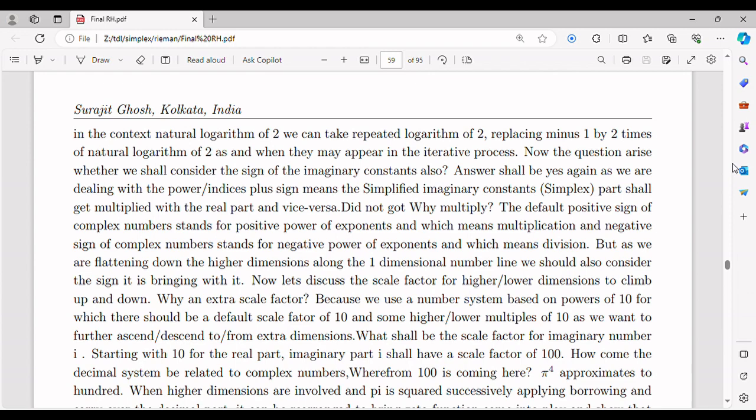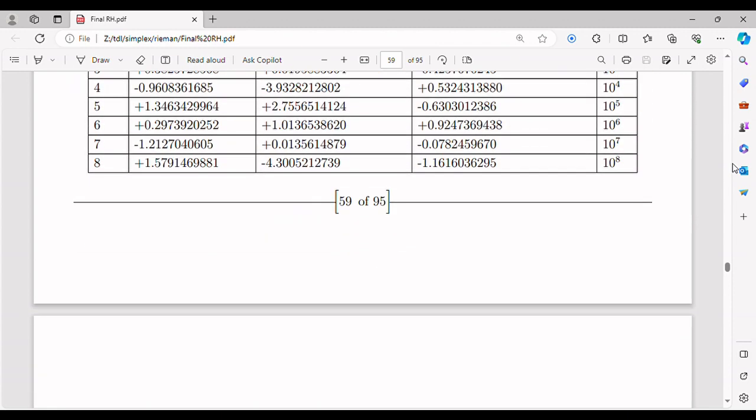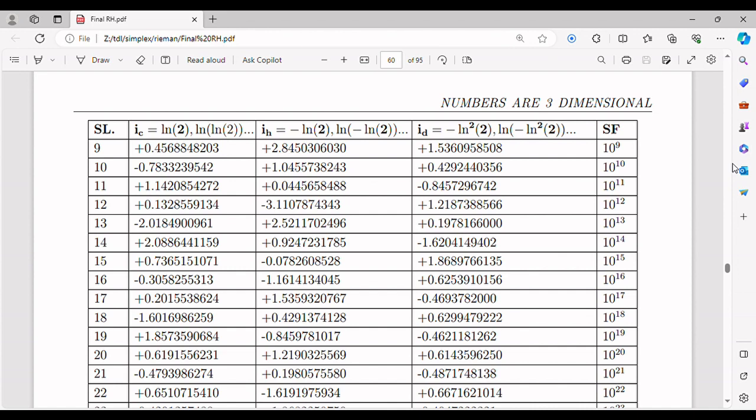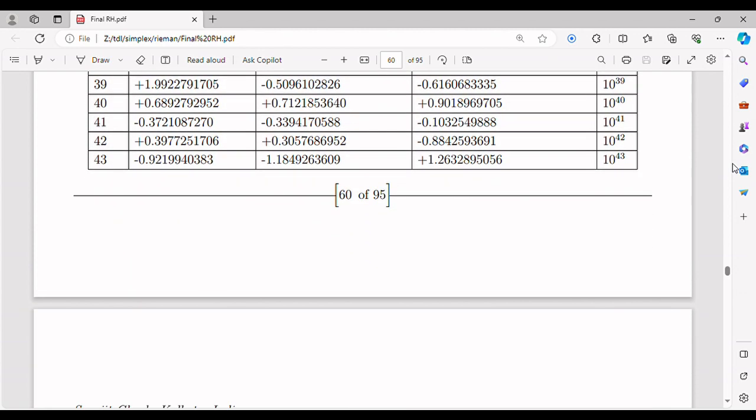To address this issue, it is crucial to foster an environment that encourages open-mindedness, intellectual curiosity, and respectful dialogue within the scientific community. Scientists should be encouraged to critically evaluate and engage with unconventional ideas, even if they challenge existing knowledge. Funding agencies, academic institutions, and scientific journals can play a pivotal role in promoting inclusivity, supporting interdisciplinary collaborations, and providing platforms for the dissemination of diverse scientific perspectives.